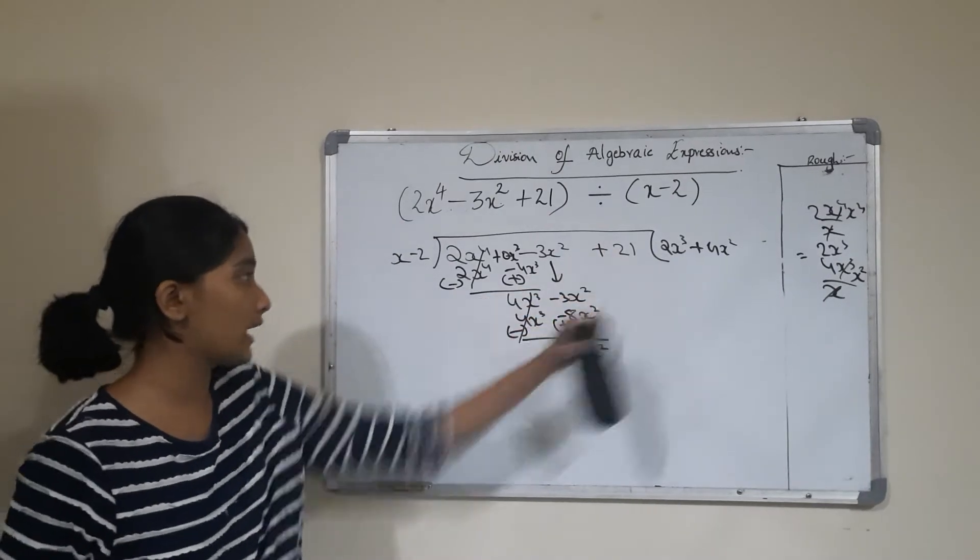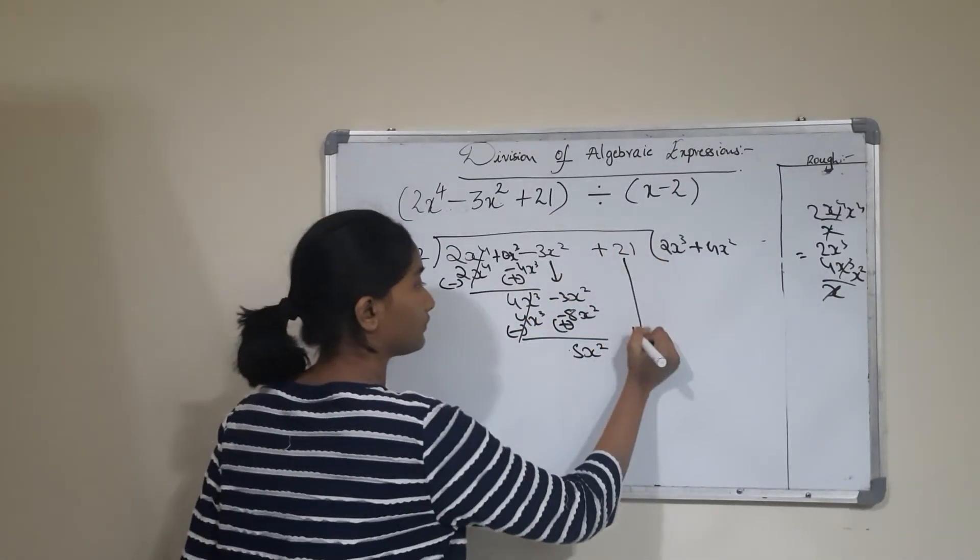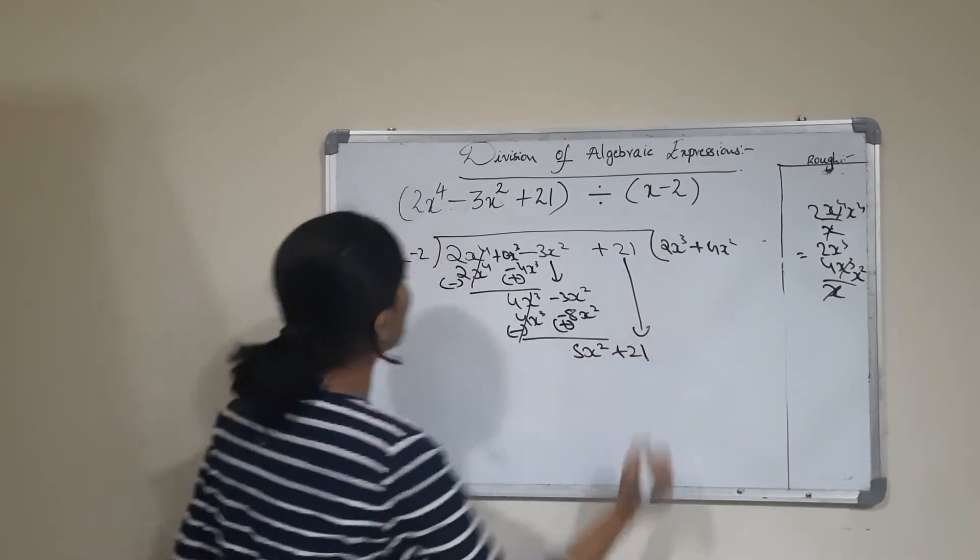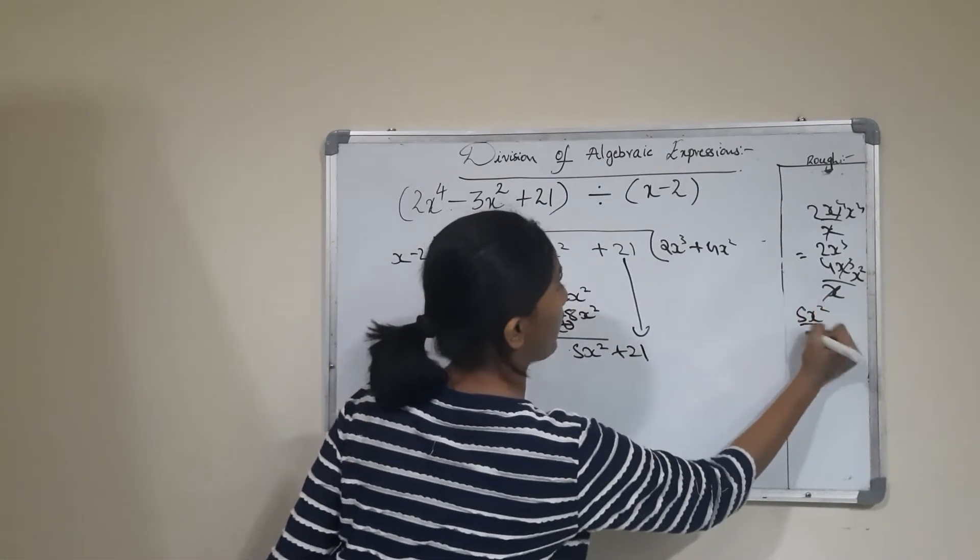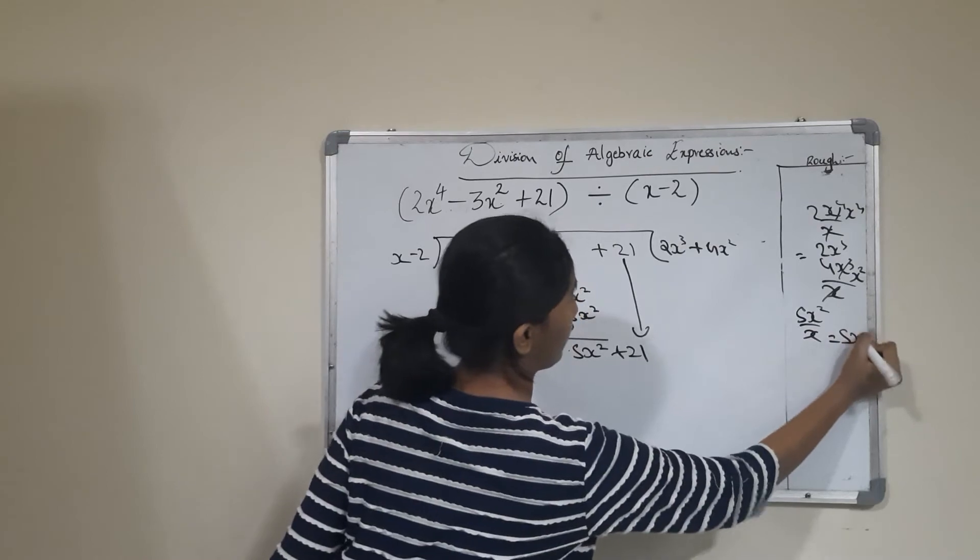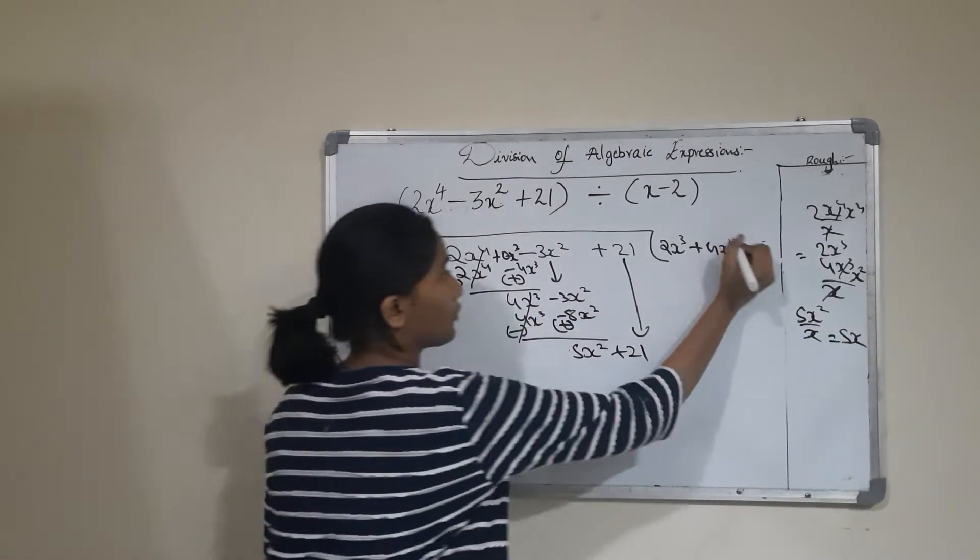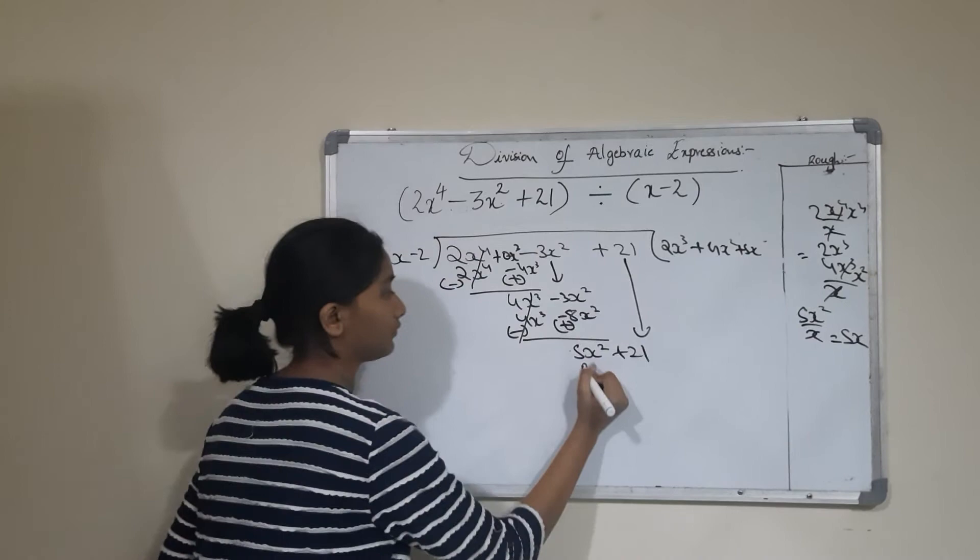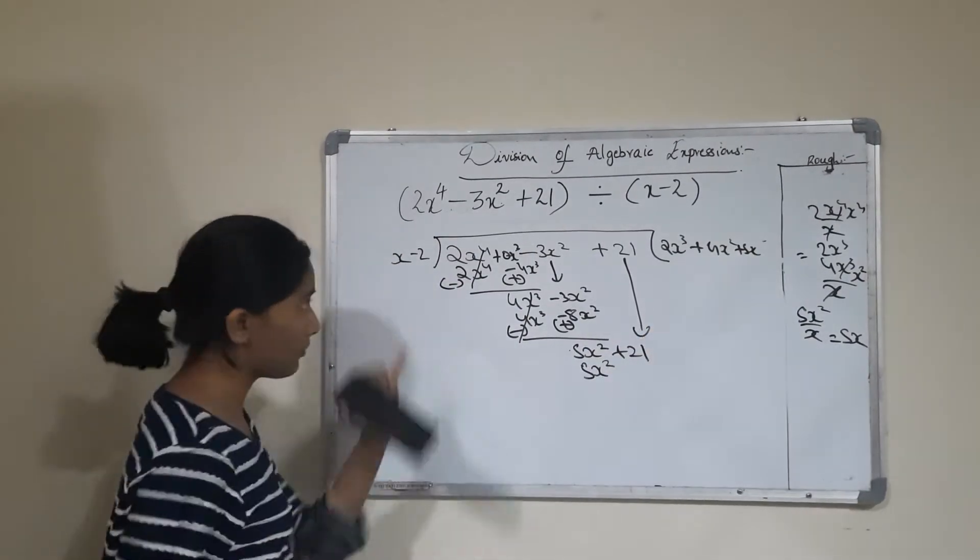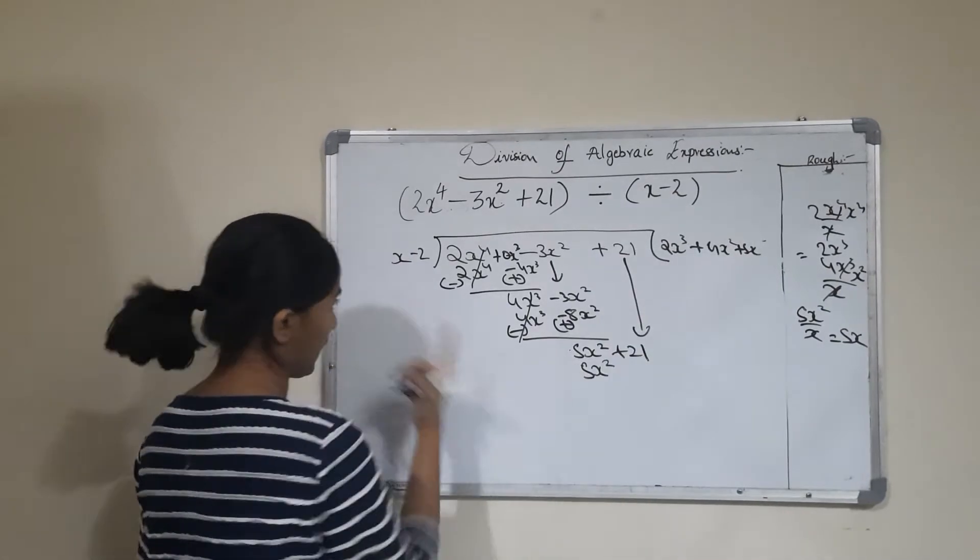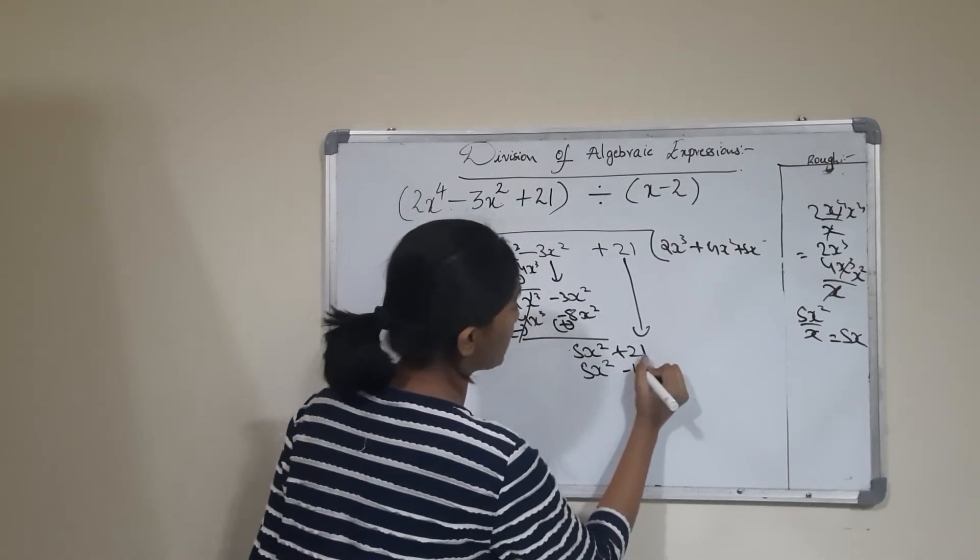Bring down +21. Now divide 5x^2 by x to get 5x. I'll write +5x here. Multiply 5x by -2 to get -10x.